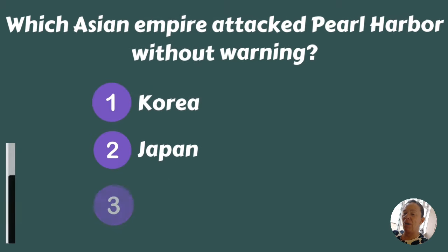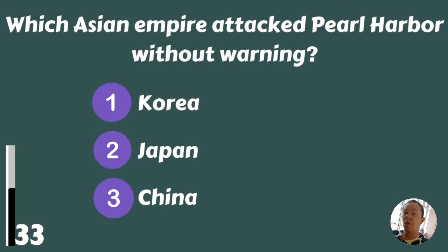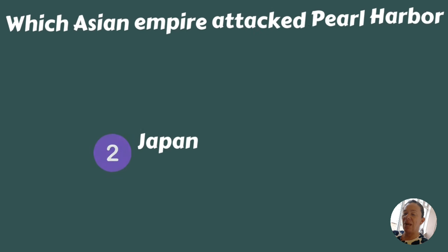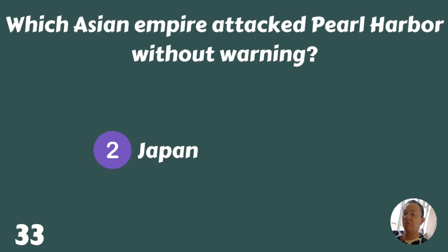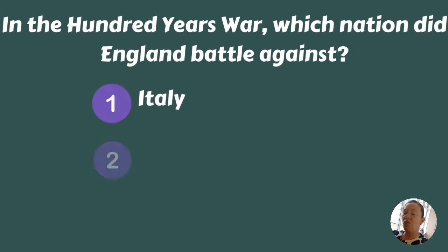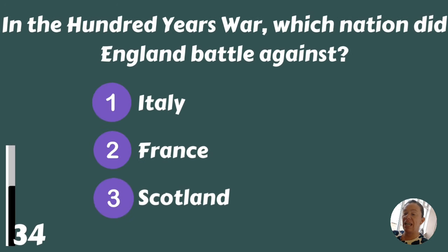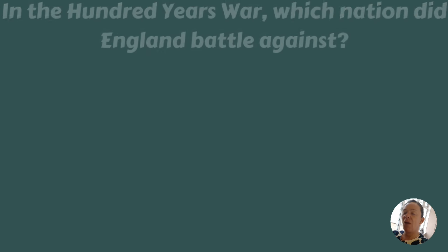Which Asian empire attacked Pearl Harbour without warning — Japan or China? Japan. In the Hundred Years' War, which nation did England battle against — Italy, France, or Scotland? France.